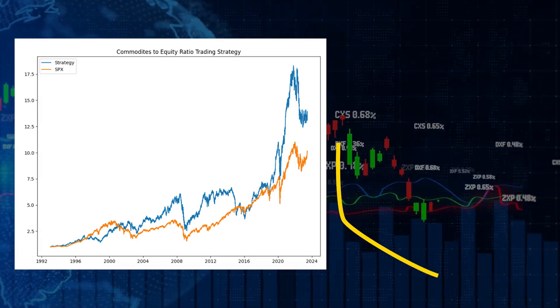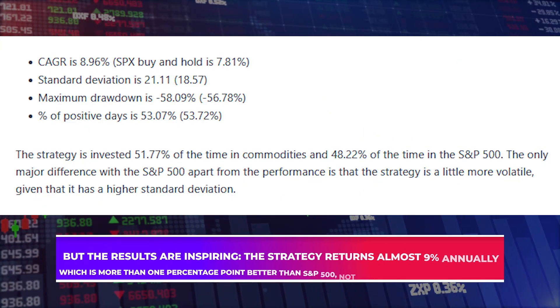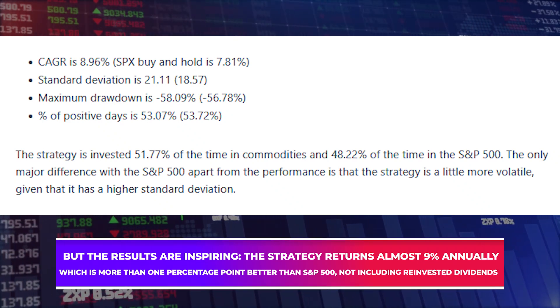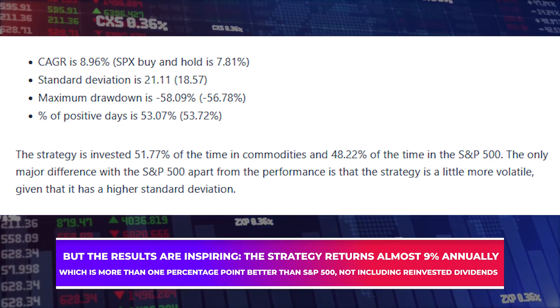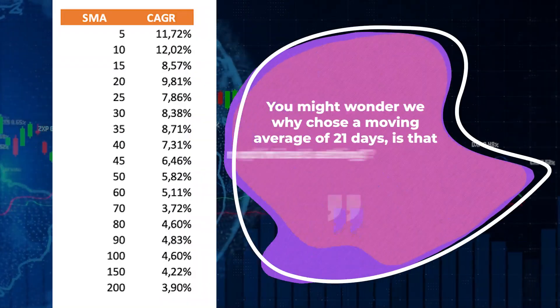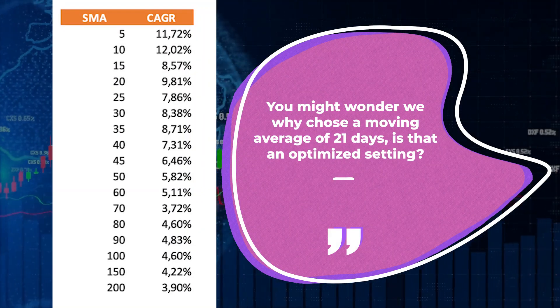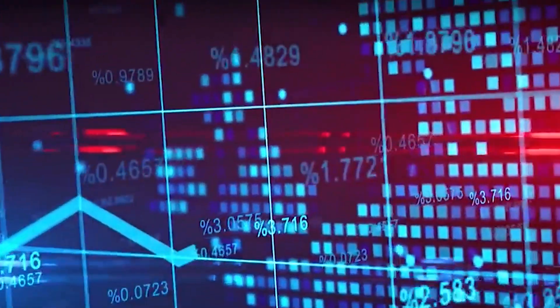It's a pretty volatile strategy, but the results are inspiring. The strategy returns almost 9% annually, which is more than one percentage point better than S&P 500, not including reinvested dividends. You might wonder why we chose a moving average of 21 days. It's not the optimal setting — the strategy works best with a short moving average, and it gets less efficient the more days in the average.